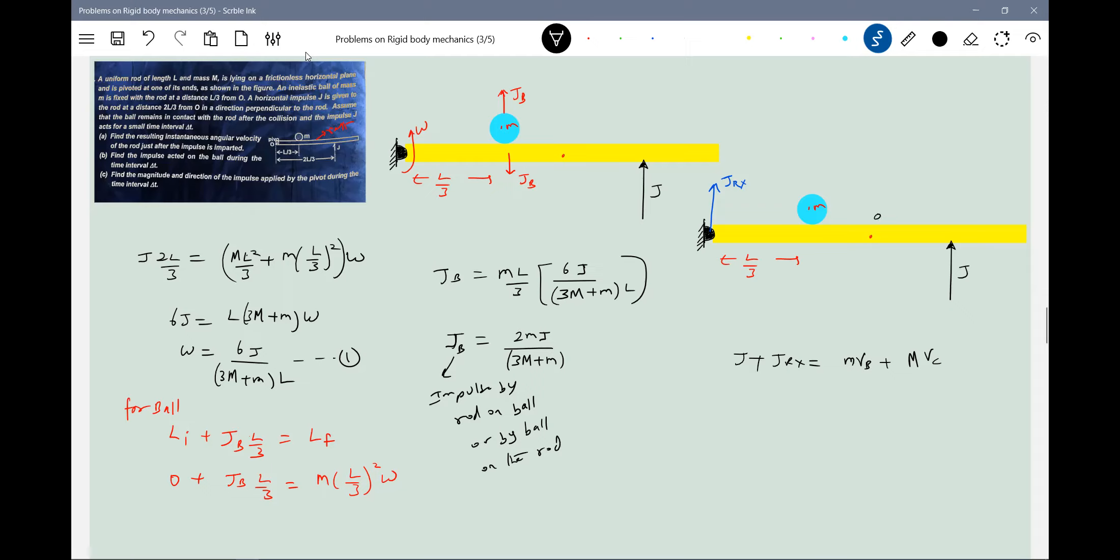Only the impulsive reaction will come along X axis. Why? Because when you apply impulse, the very next moment it will try to move. The whole rod plus ball will try to move. So the hinge will oppose. So therefore the impulsive reaction is acting on the rod. I'll solve it. If I get negative, I'll change the direction. Then impulse linear momentum equation, I'll apply J plus J R X equals small m into velocity of ball plus capital M into velocity of the rod.